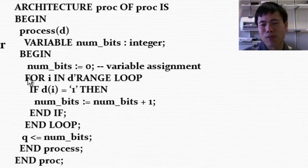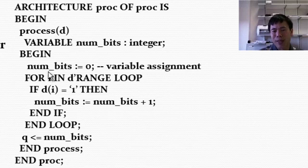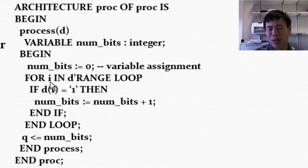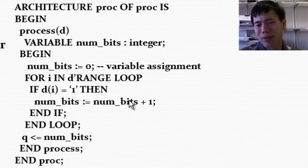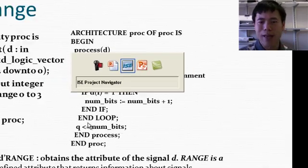Then followed by a for loop, for i, which is the integer in the d range. So i will get a value of 0, 1, 2, or 3. So loop it over. If d(i) is 1, then we add number of bits by 1. In this if structure, and then we loop it over. Once we've done this, then the output number of bits will keep the number of bits high. If it's high, then we sum it together. Then we put the signal to the output Q. So now let's go back to the actual programming.